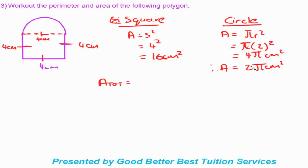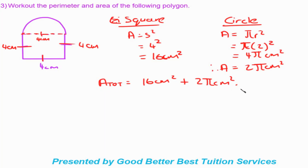The total area is sixteen centimeters squared plus two pi centimeters squared. We leave this answer in terms of pi because pi is an irrational number and its exact value hasn't been substituted in — so we leave it as sixteen plus two pi centimeters squared.